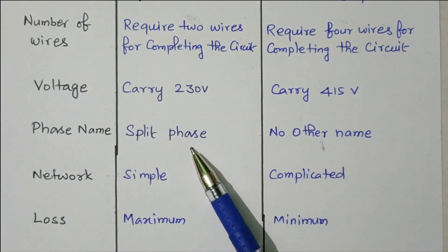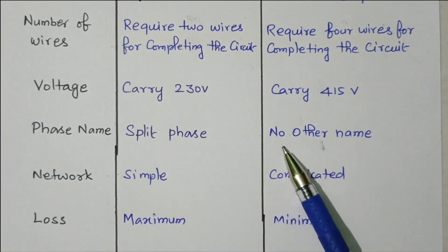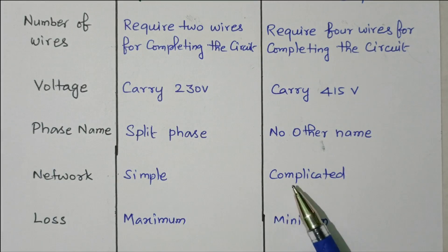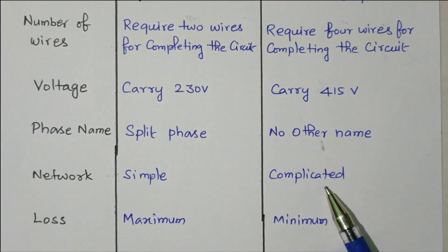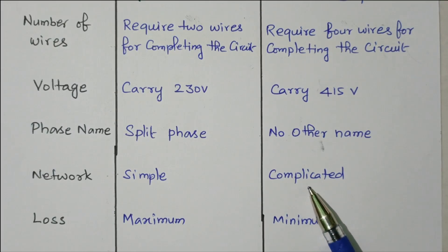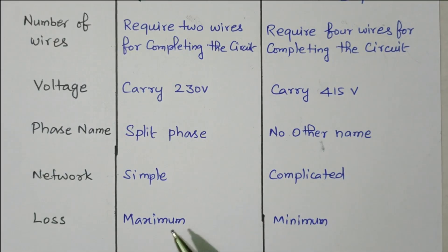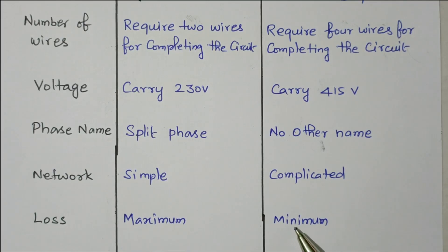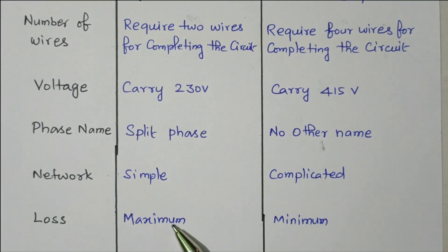Regarding phase name: single-phase is also called split phase, as only two wires are used. Three-phase uses R phase, Y phase, and B phase. The single-phase network is simple because we have only two wires — phase and neutral. Three-phase is more complicated, as we need to consider phase displacement, current, and voltage. In terms of losses, single-phase has maximum losses because only one phase is available and the sum of positive and negative half cycles is zero. In three-phase, losses are minimum because at any given time we have approximately 1.6 times the voltage always being utilized by the load.